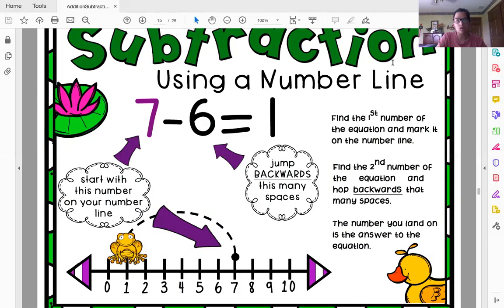So this says subtraction using a number line. I have my equation right here, and I have my number line here. We've used this number line many times before. So you guys are pros, but we're going to switch it. Instead of jumping this direction, we're going to jump backwards. We're going to jump this direction towards zero. So let me start from the beginning. Find the first number of the equation and mark it on the number line.